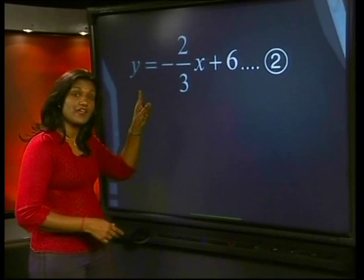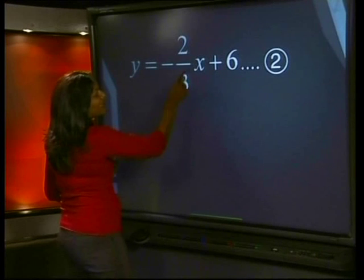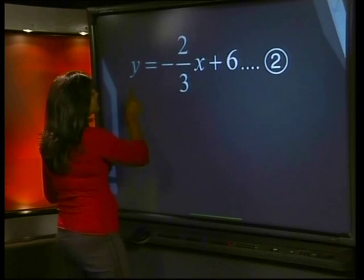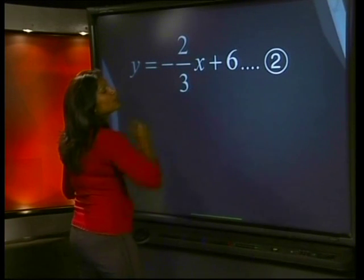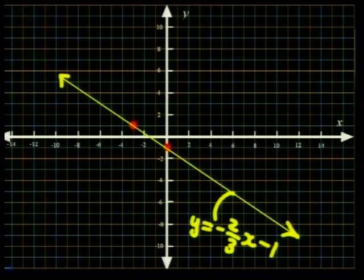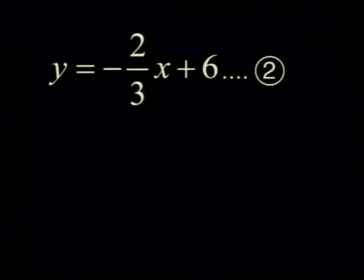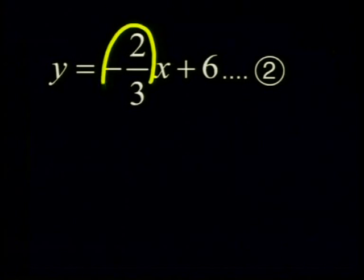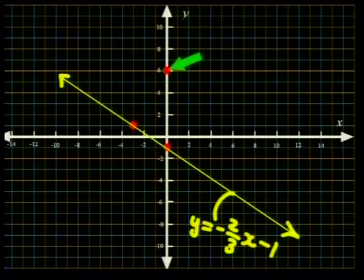Now, for the other graph. The y-intercept occurs when x is equal to 0. This means that y is equal to positive 6. And I mark that here on the y-axis. The gradient of equation 2 is negative two-thirds. So, to find the other point, we move up two units from the y-intercept and three units to the left. We'll mark this point here.